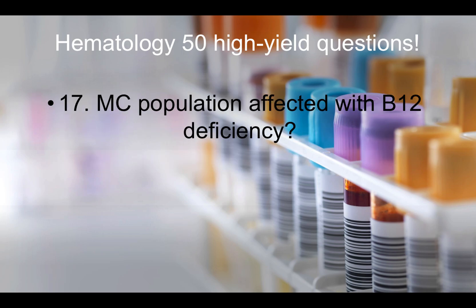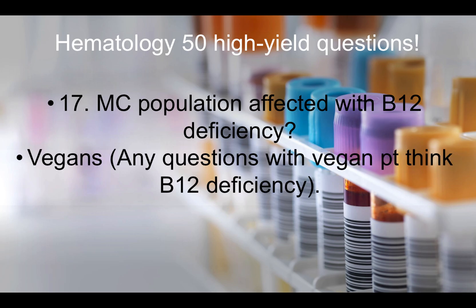Question number seventeen: Most common population affected by B12 deficiency. When it comes to B12 deficiency, you should be thinking about vegan patients. If a question stem mentions a vegan patient, instantly think about B12 deficiency.